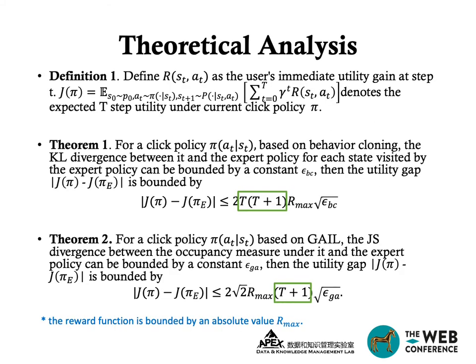We also analyze theoretically how the exposure bias is reduced. We define J(pi) as the expected k-t-step utility of a user under the current click policy, then analyze the utility gap of the traditional supervised method and our method. From Theorem 1 and Theorem 2, the utility gap is significantly reduced from quadratic to linear in the step size T.